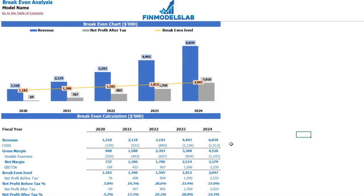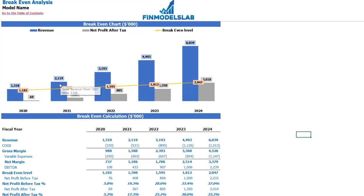On the break-even tab you may find the calculation of the revenue break-even level and a break-even chart. For this particular use case you may find that your revenue break-even level is less than the actual revenue calculation, which means that the company is profitable.